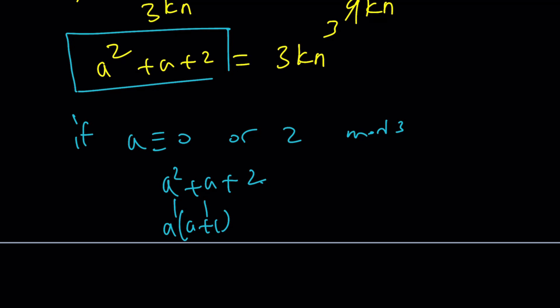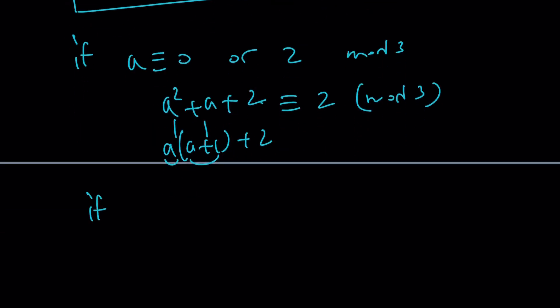Because 2 × 3 + 2 is going to be 2 mod 3 again. So this is always going to be 2 mod 3 if a is 0 or 2 mod 3. If a ≡ 1 (mod 3), then this is going to be the following: this is 1, this is 1, and this is 2.